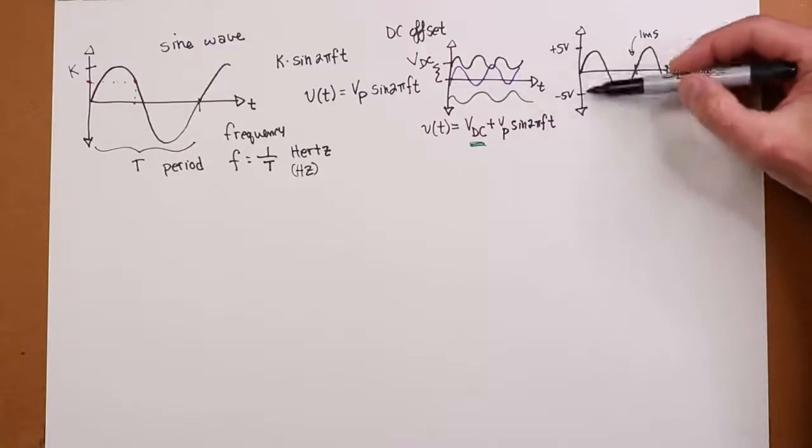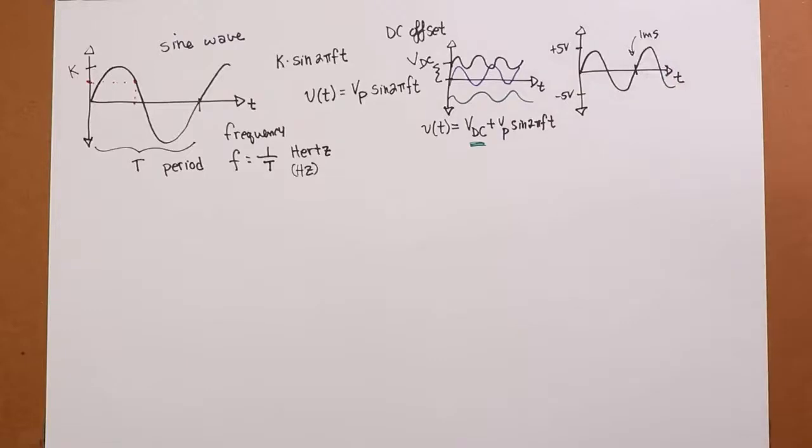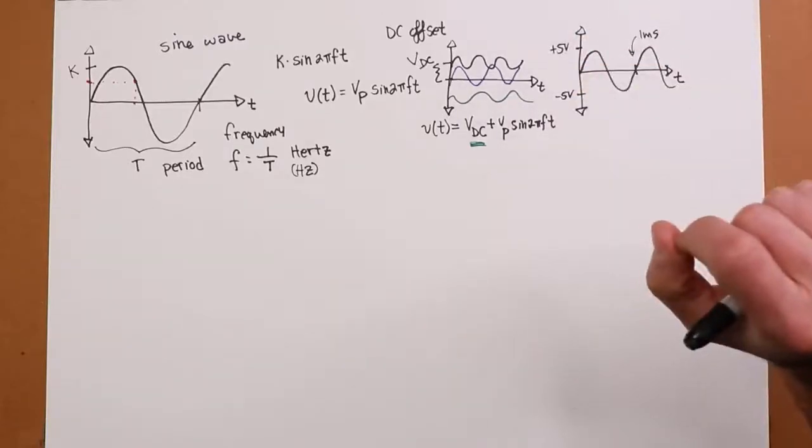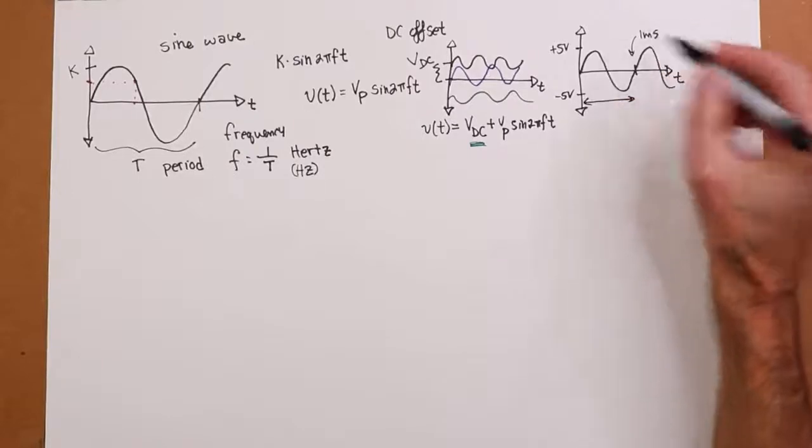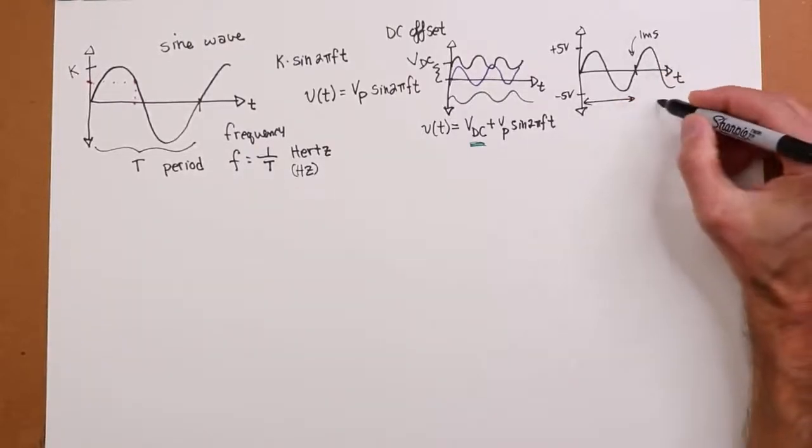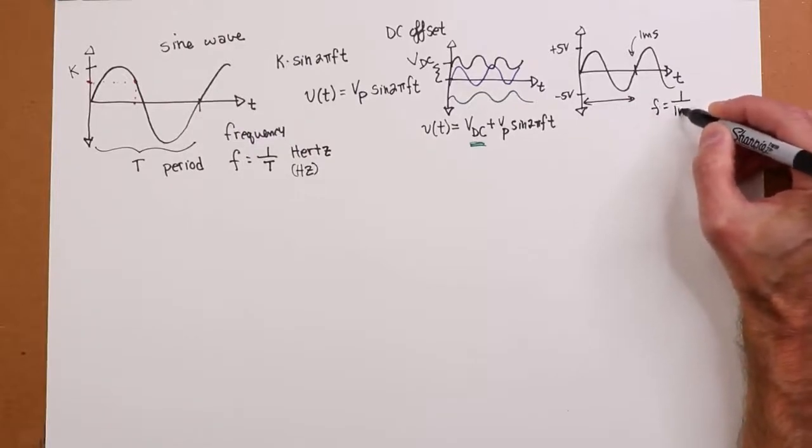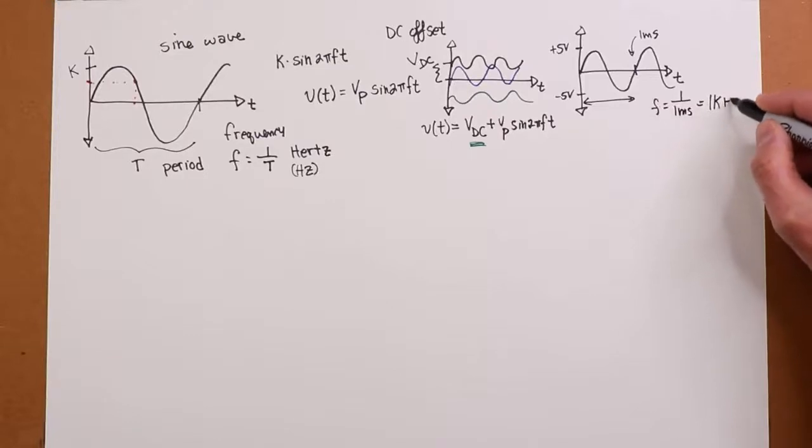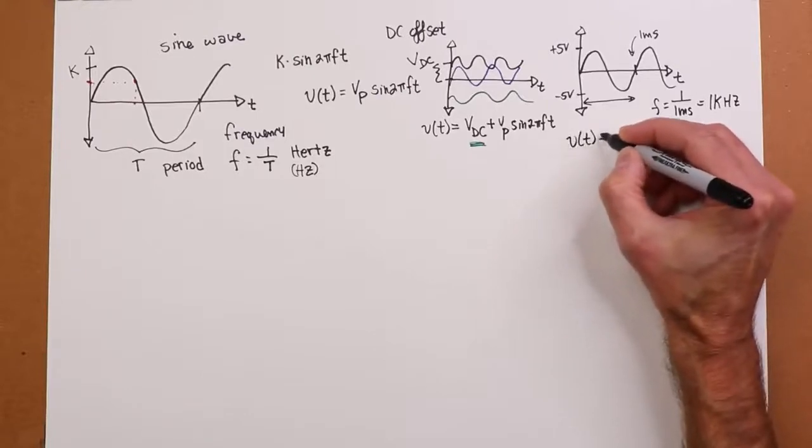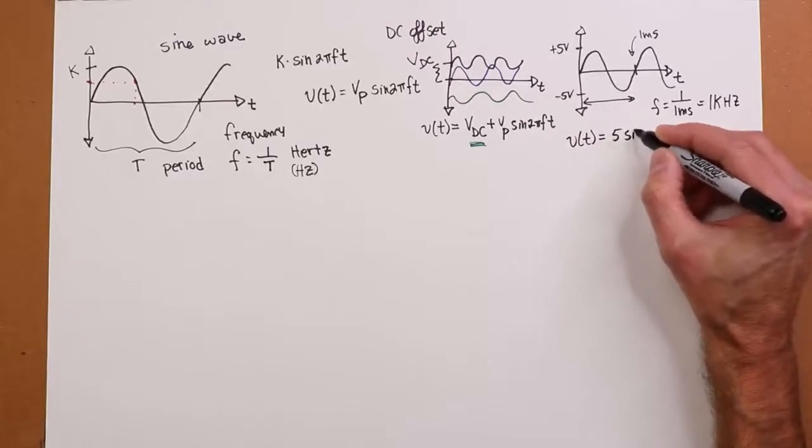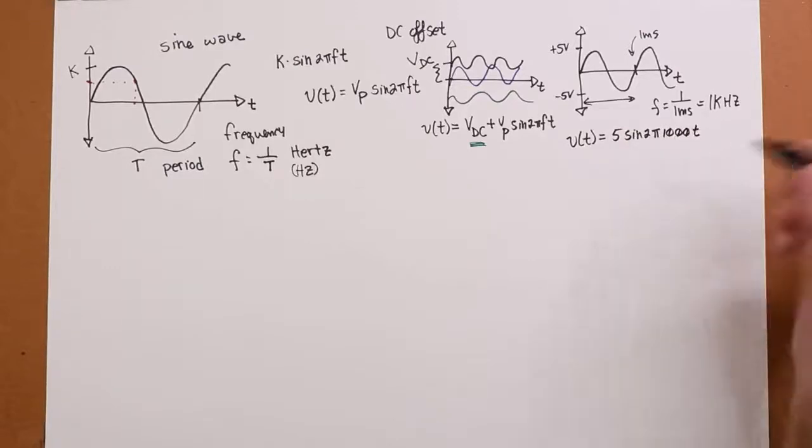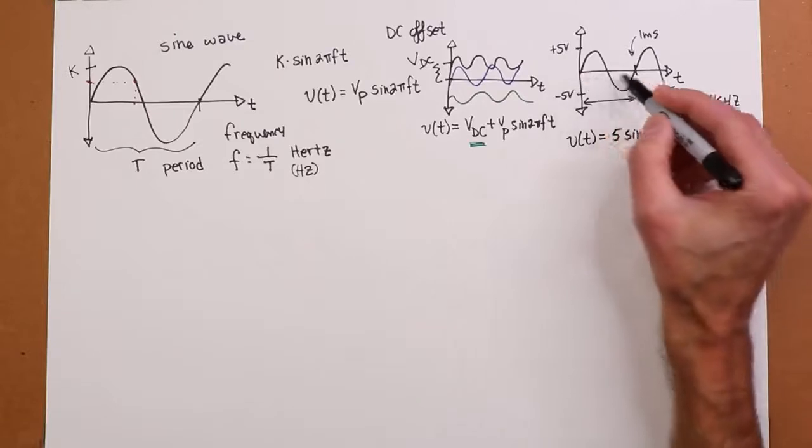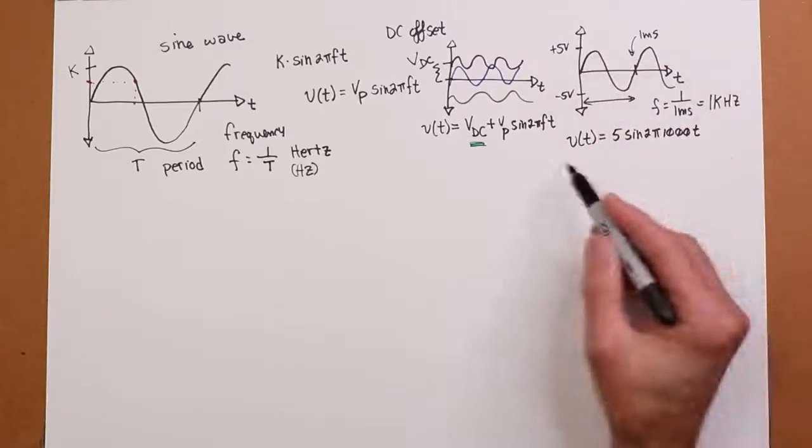If it did have an offset you could take the difference between the two peaks, that would give you the peak to peak value, divide that by 2 and you'd have the peak, and then you could figure out what the offset happened to be. The other thing that we know is the time period for one cycle, that's 1 millisecond, and the frequency is 1 over T. So F is 1 over 1 millisecond, which is 1 kilohertz. So the equation for this V of T is that peak value 5 times the sine of 2 pi F which is 1,000 T.